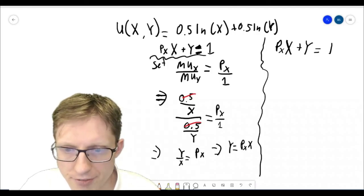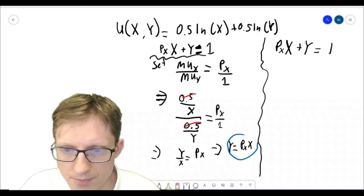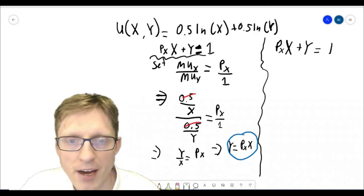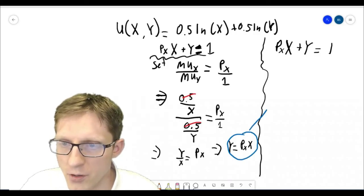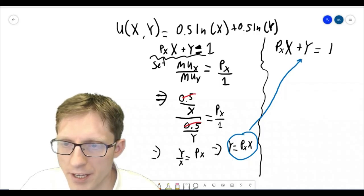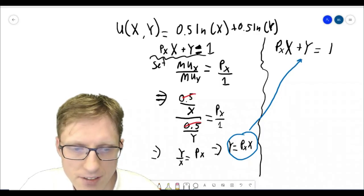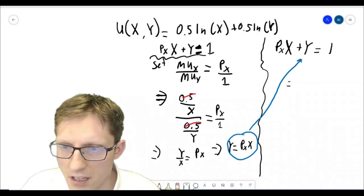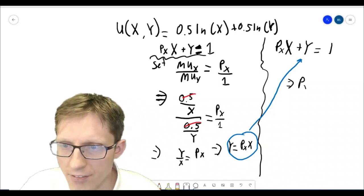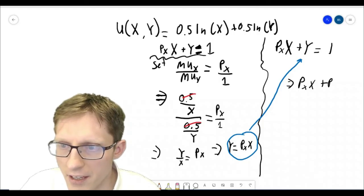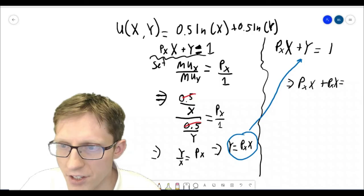So now what we're going to do is we're going to find this relationship between y and x that we found in the first step of solving this problem. And we're going to plug it in. And this is going to give us the price of x times x plus, substituting in for y, price of x times x is equal to 1.